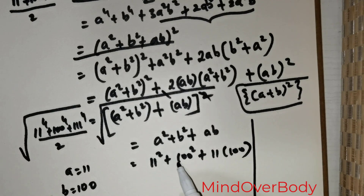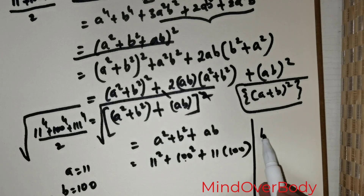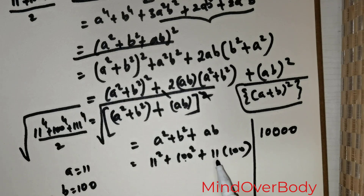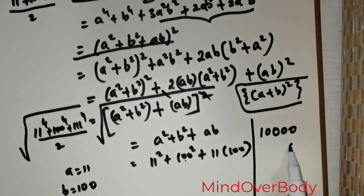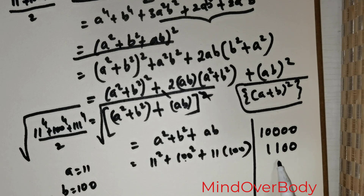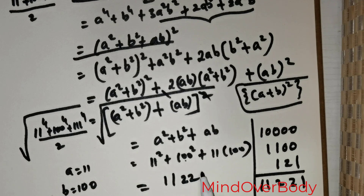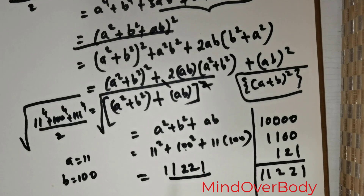Now let me add these things up. 100 squared is 10000, and 11 times 100 is 1100. 11 squared is 121. If I were to add these, I get 1, 2, 2, 1, 1. So this is equal to 11221. So this is the solution for this question.